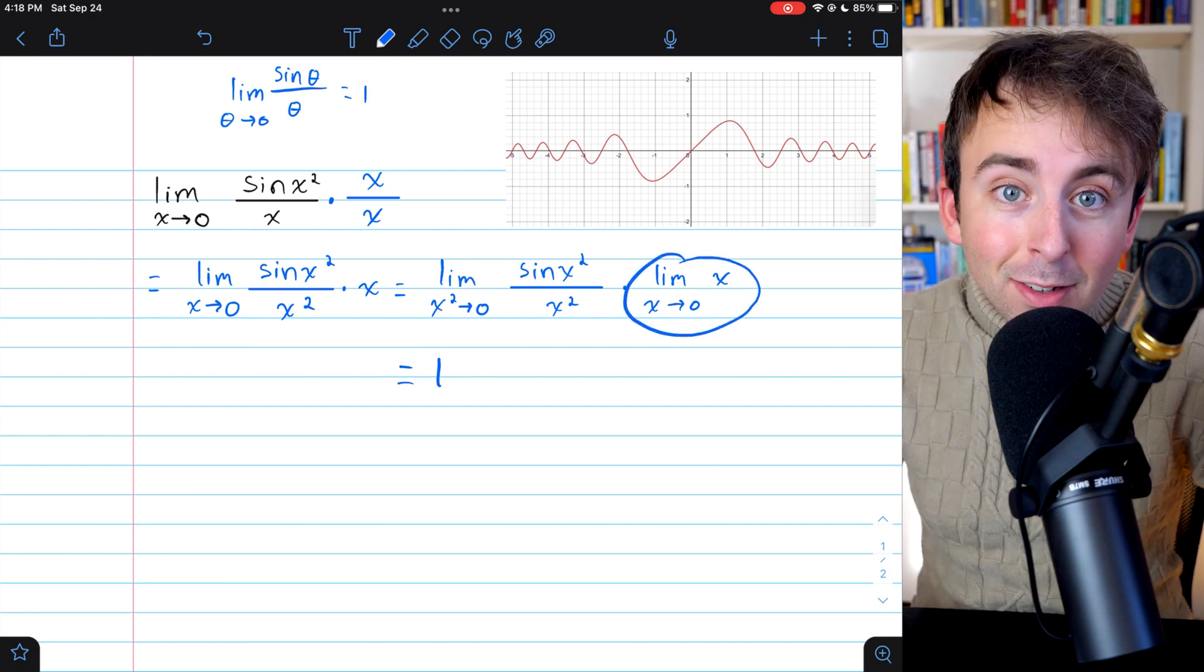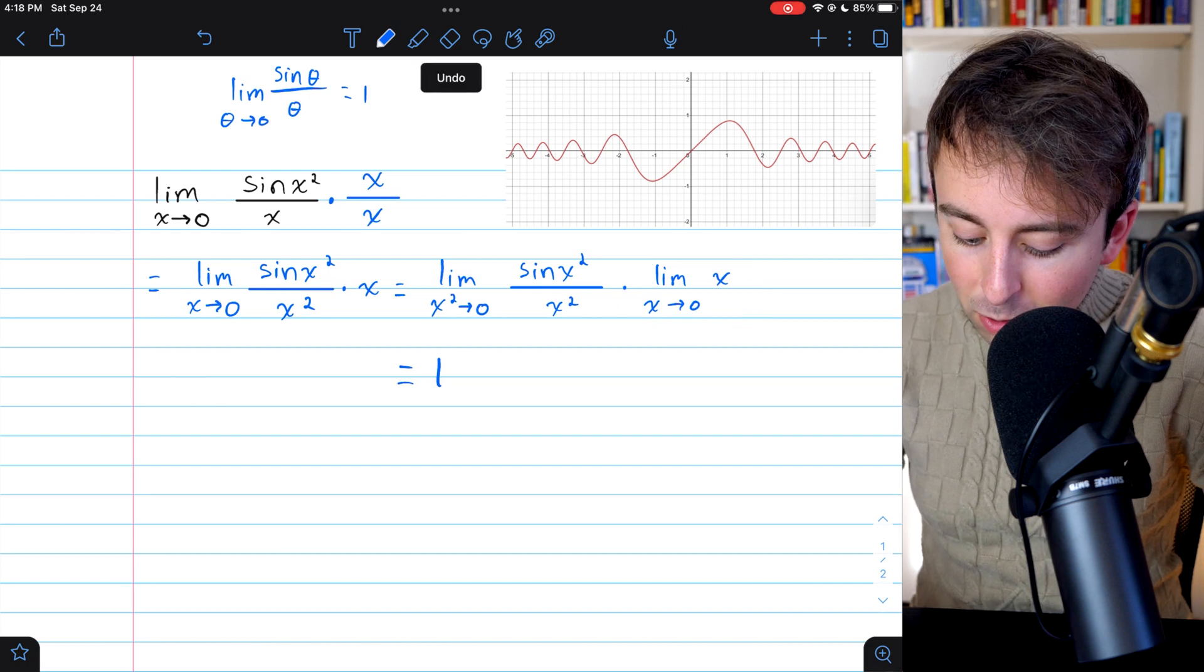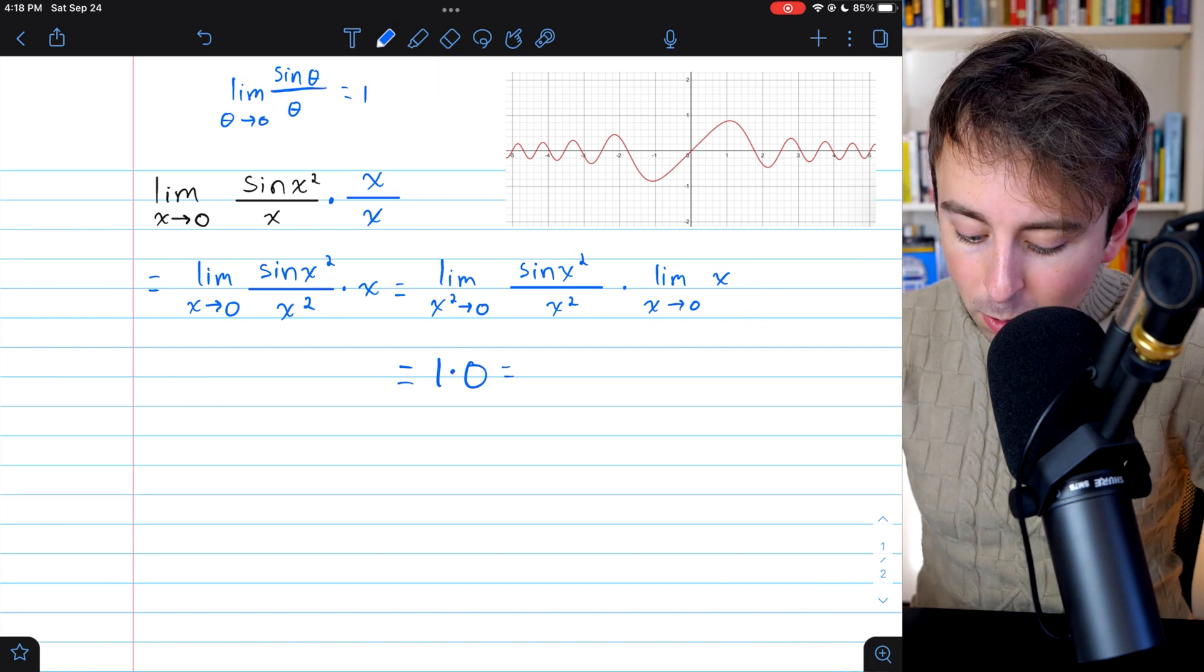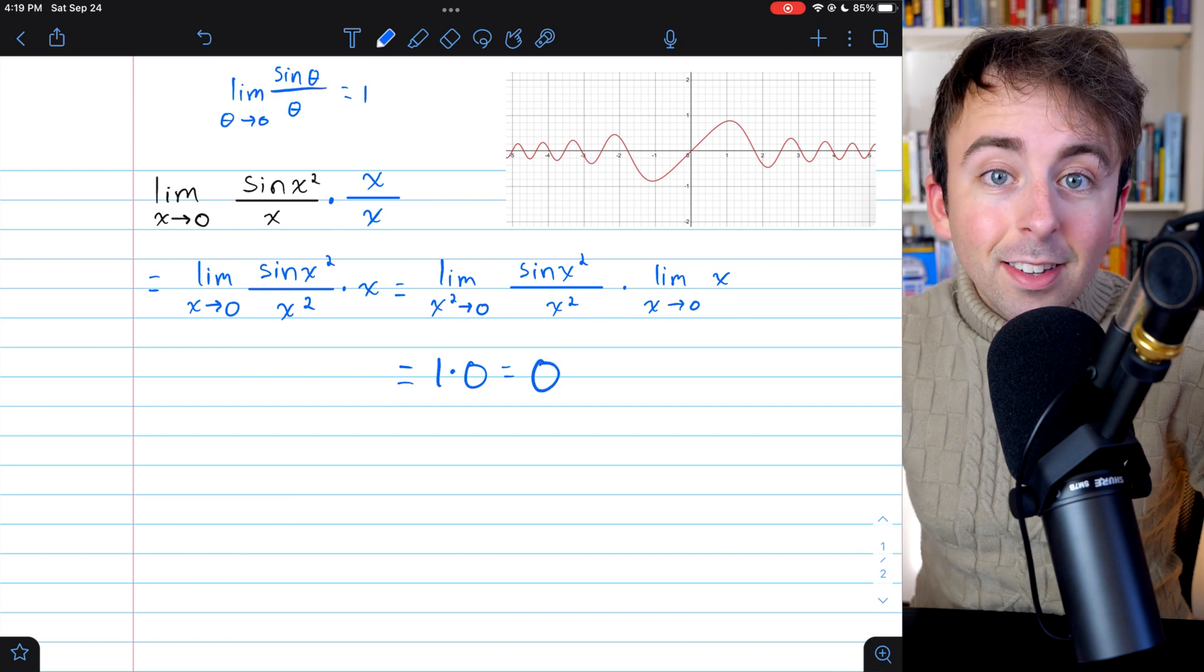And this other limit is even easier. The limit of x as x approaches zero is zero. So by the limit product rule, I have that the limit is zero.